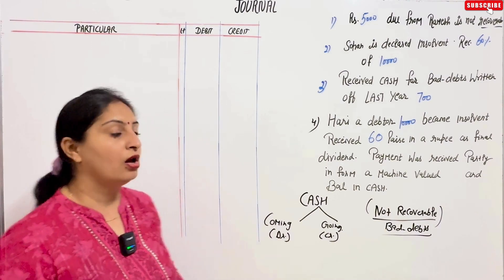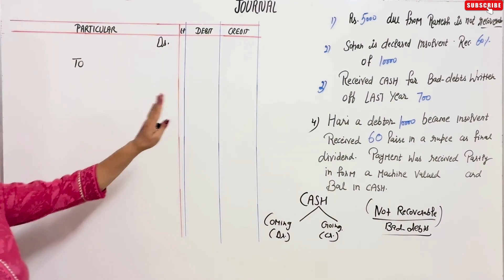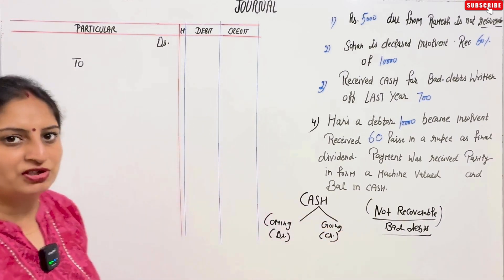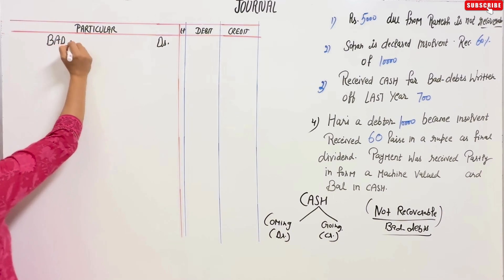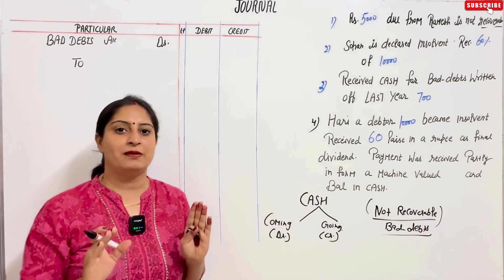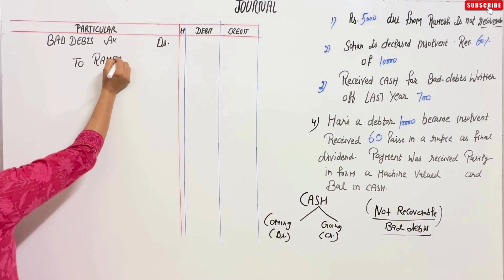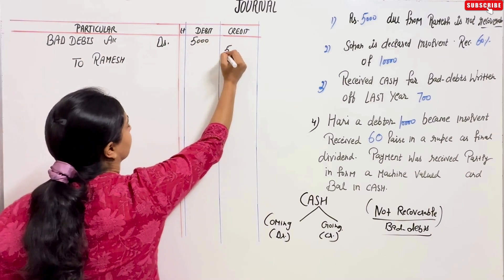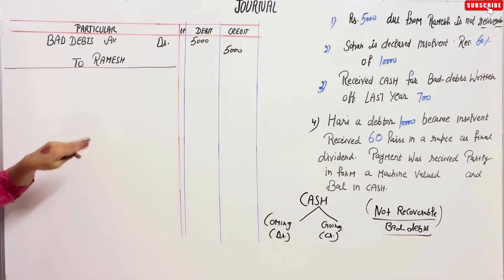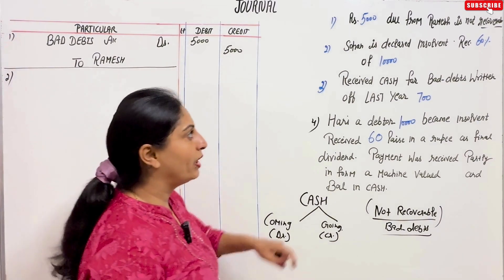Bad debts — what happens in the journal entry? Bad debts is debited, never credited. In the first equation we have no cash rule, so 'not recoverable' means bad debts is a debit. Bad debts account debit. Now who has bad debts? Ramesh. When you log bad debts, you are removing a person from the state, so we divide out of the state. Ramesh — how much? 5,000. This is our first entry. The narration: amount due from Ramesh is not recoverable.